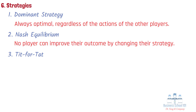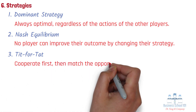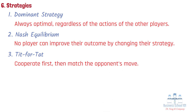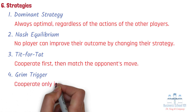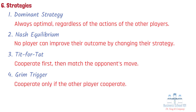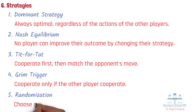Third, tit for tat: a strategy that involves cooperating on the first move and then matching the opponent's move in subsequent moves. This strategy is often effective in promoting cooperation between players. Fourth, grim trigger: a strategy that involves cooperating as long as the other player cooperates, but switching to defection if the other player defects — often effective in punishing non-cooperative behavior. Fifth, randomization: choosing a strategy randomly according to a predetermined probability distribution, which can be effective in games where other players cannot predict your behavior. Players often need to use a combination of strategies to achieve the optimal outcome.